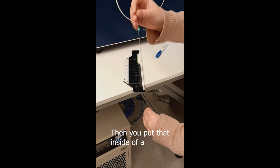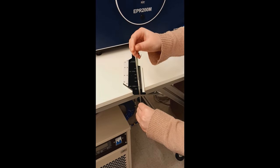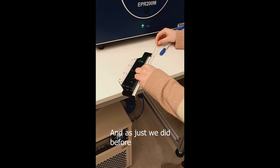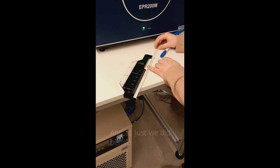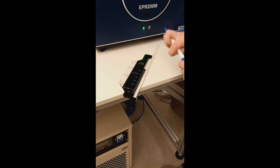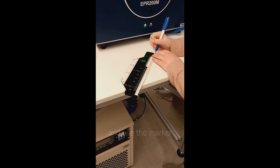Then you put the capillary inside of a larger ESR tube, and then just as we did before, we line it up and use a marker to mark the top of the tube.